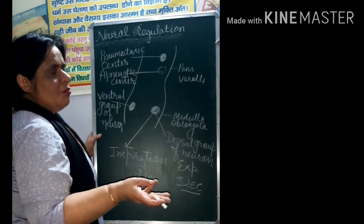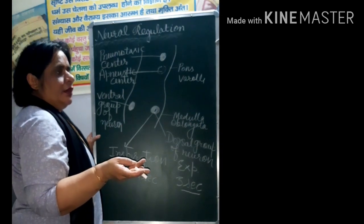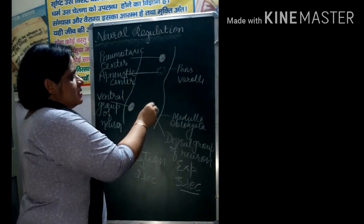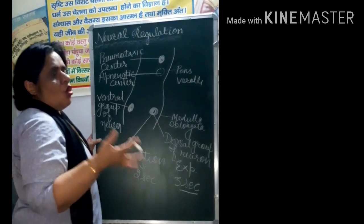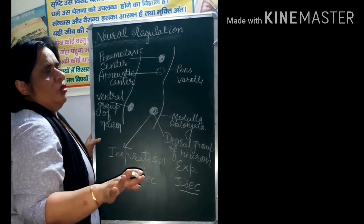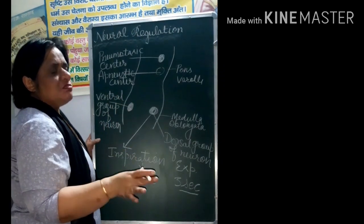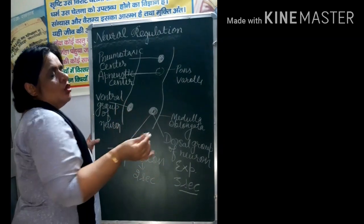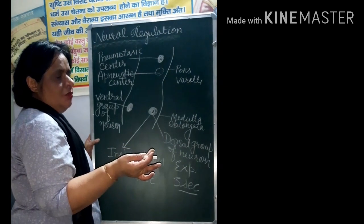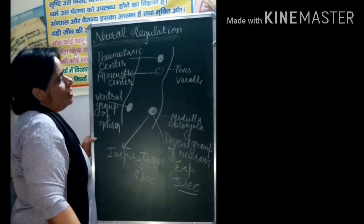Dorsal Group of Neuron they go to the diaphragm, external intercostal muscle and abdominal muscle. They control both inspiration as well as expiration that means their muscle are supplied to diaphragm, intercostal muscle, external intercostal and internal intercostal muscle, then abdominal muscle also. They are included in this group that is the ventral group of neuron.